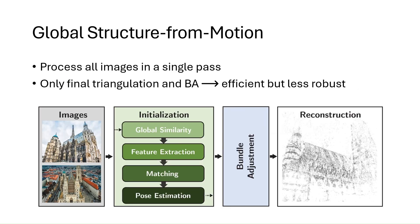On the other hand, global Structure from Motion methods process images in a single pass. This method typically requires only final triangulation and bundle adjustments, making them significantly more efficient than their incremental counterparts. However, as camera poses are estimated from relative poses, global methods tend to be less robust.